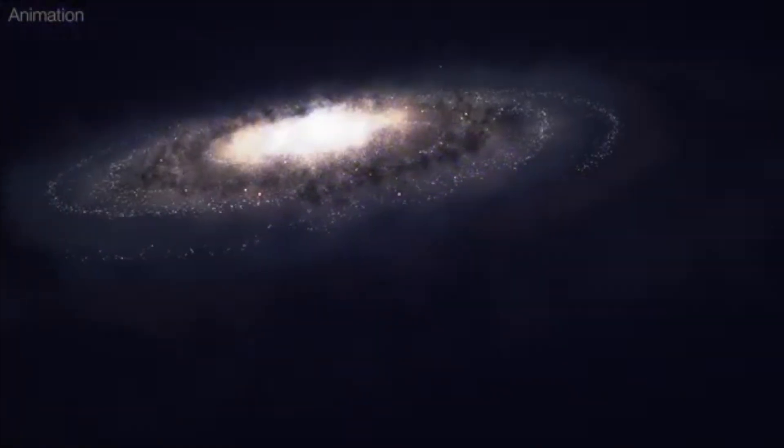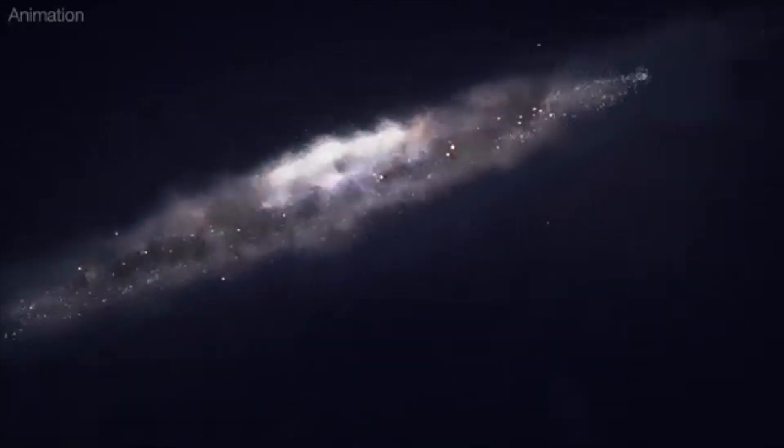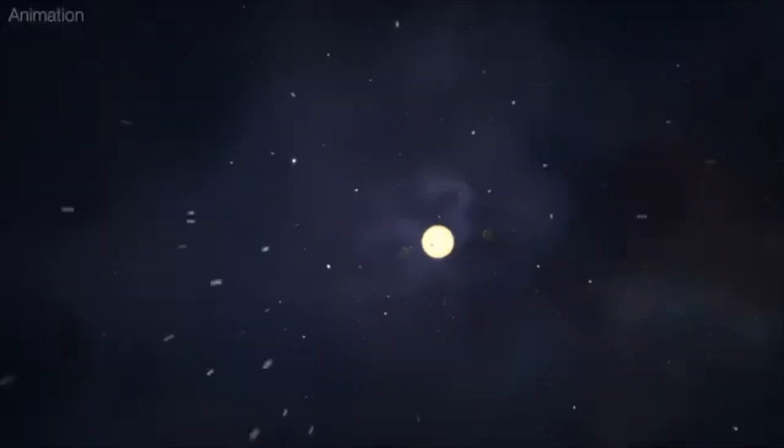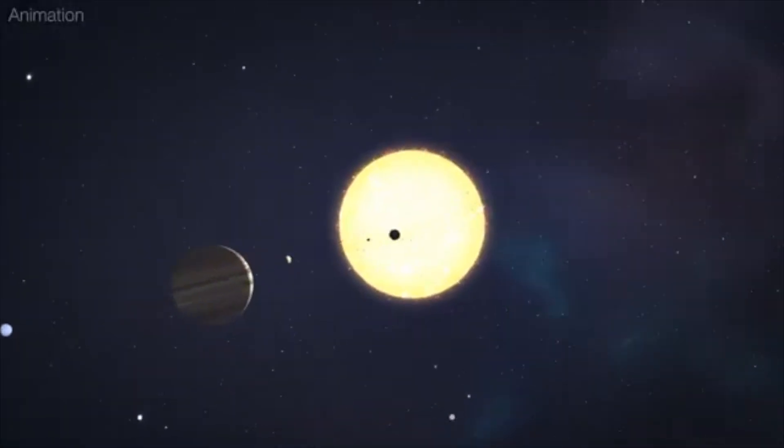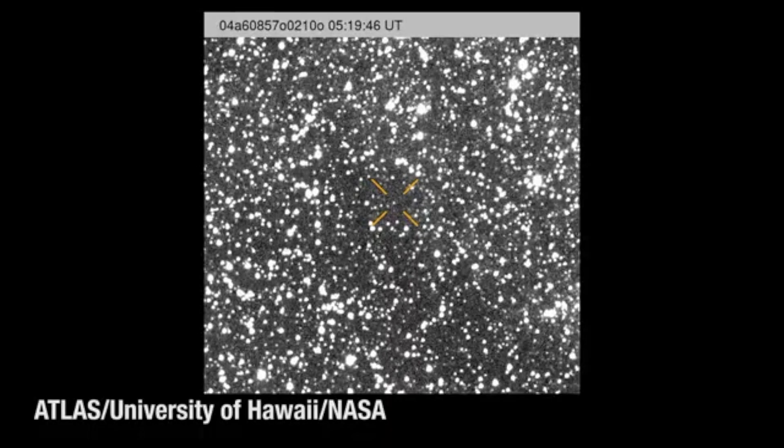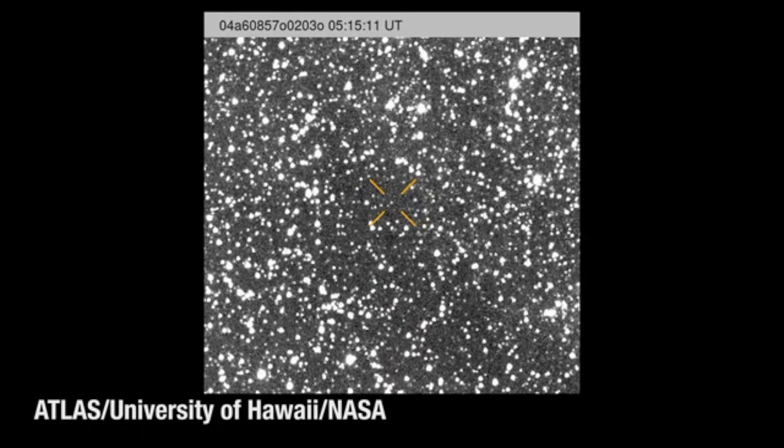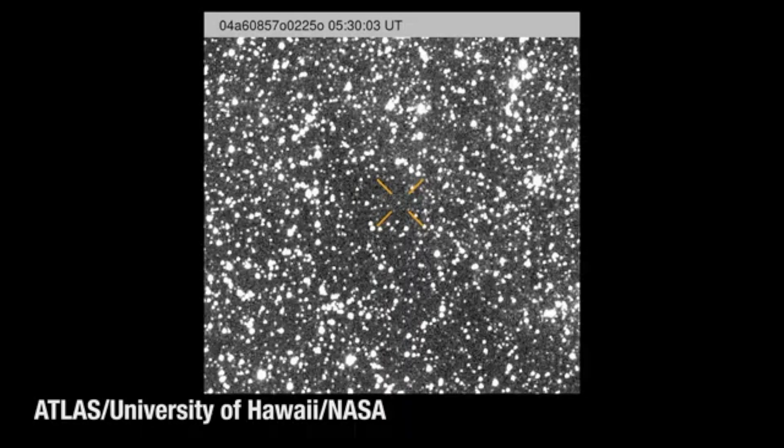In what may be the final chapter in its space odyssey, 3I Atlas is plunging toward the sun at a staggering 130,000 miles per hour. This is the highest velocity ever recorded for a solar system visitor. The comet's astonishing speed suggests it has traversed interstellar space for billions of years.